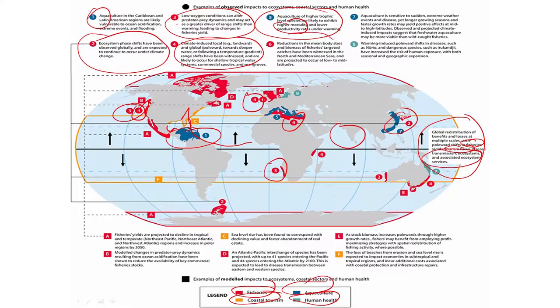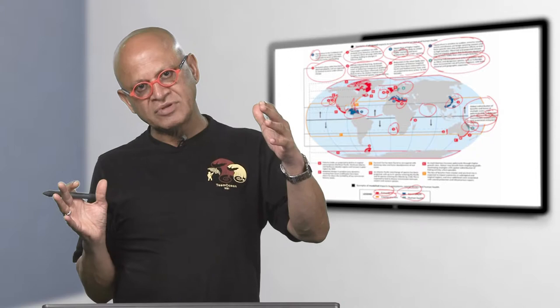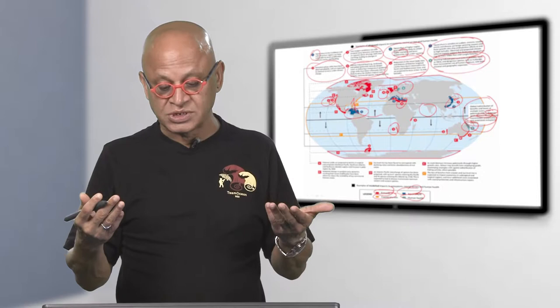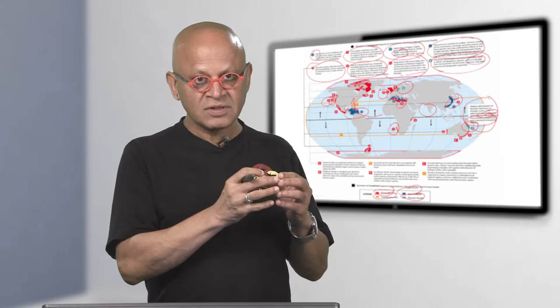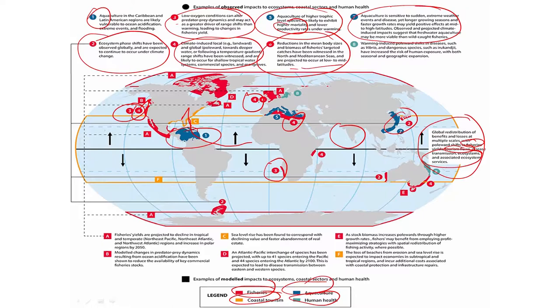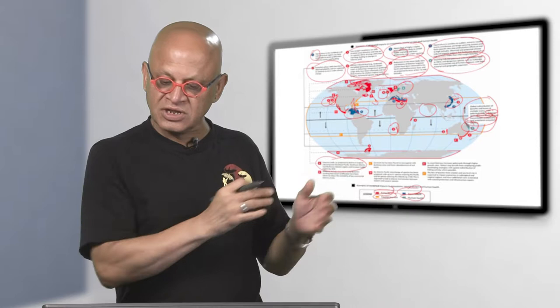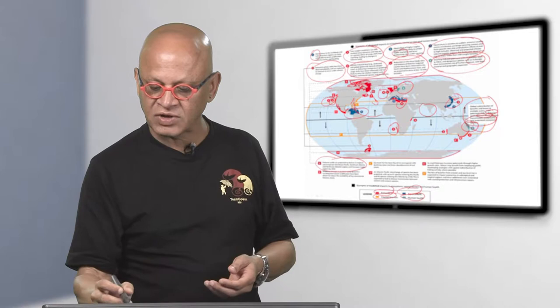Mean body sizes and biomass of fish that people catch and eat have been changing — a reduction is projected to occur at low to mid latitudes. As warming happens, the solubility of gases goes down, automatically reducing oxygen concentration in addition to deoxygenation from circulation changes. Ecosystem responses at both the individual level — mortality and body size changes — and the ecosystem level — where species movements alter predator-prey interactions — all have to be considered. Aquacultures are also sensitive to extreme weather events like storms and ocean heat waves, and these are projected to increase.